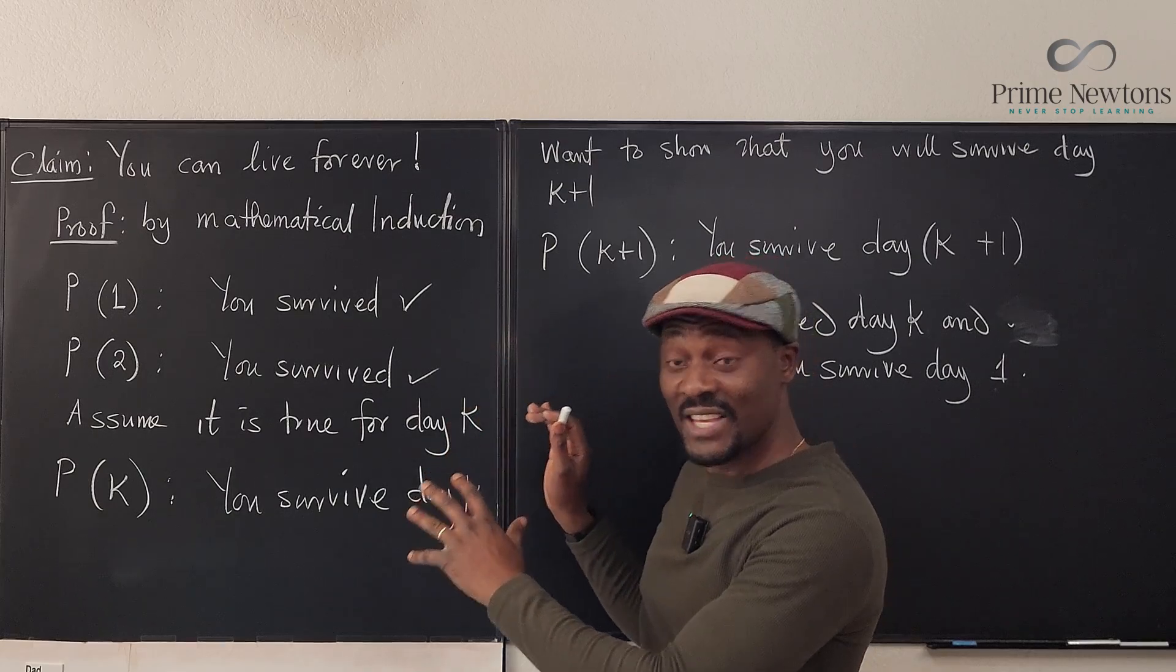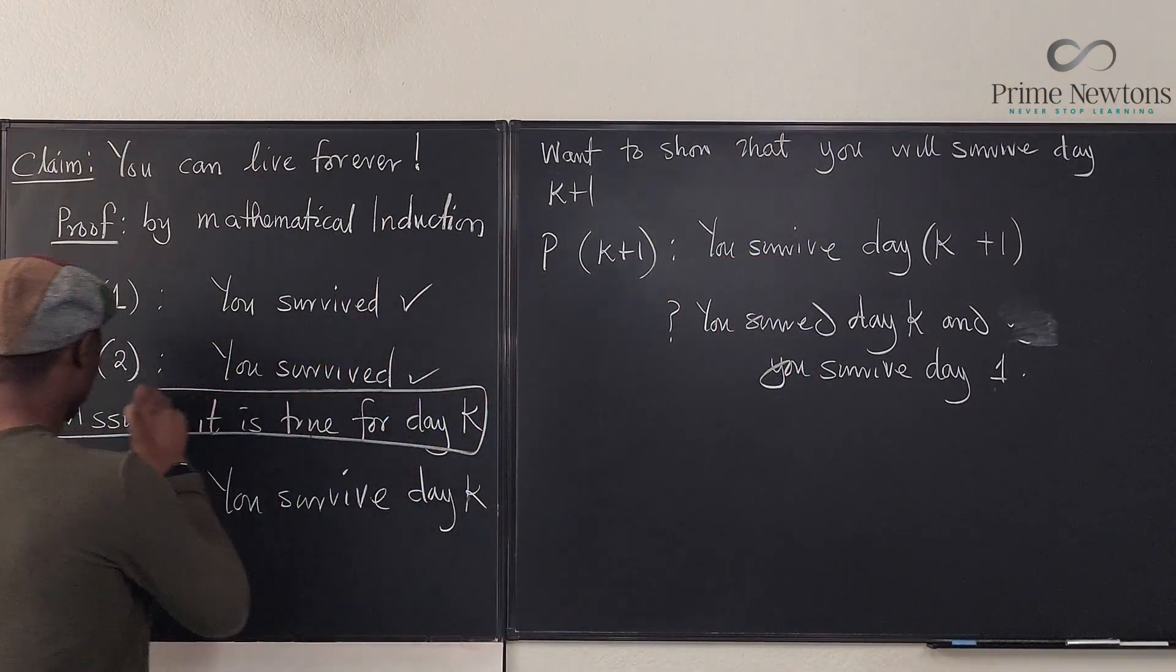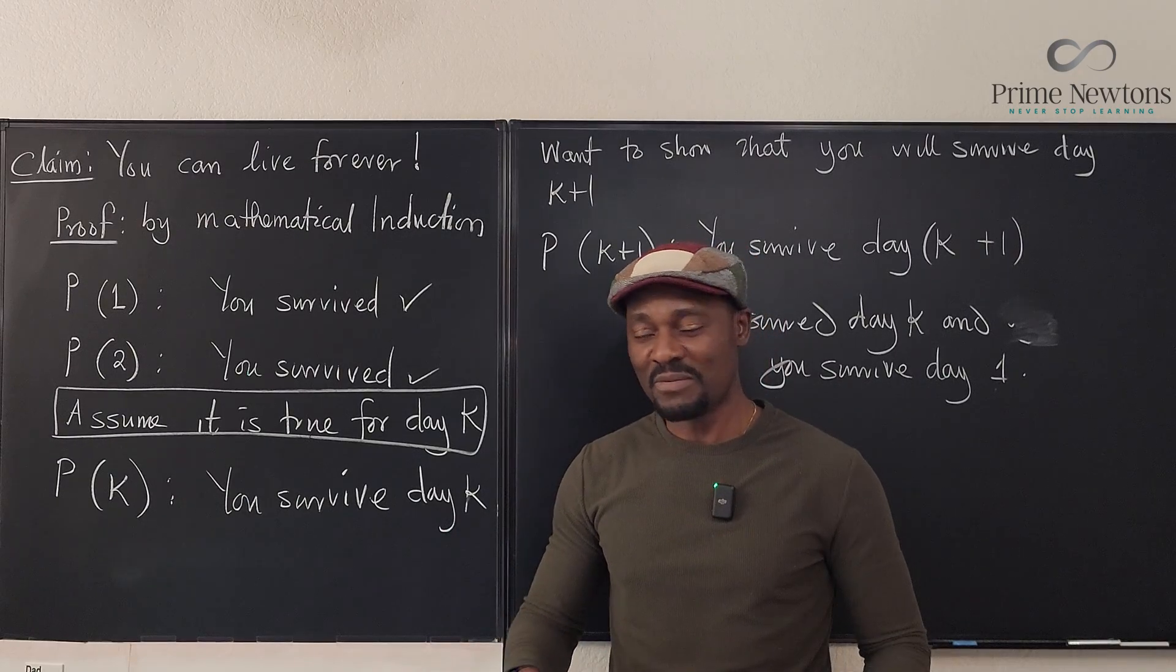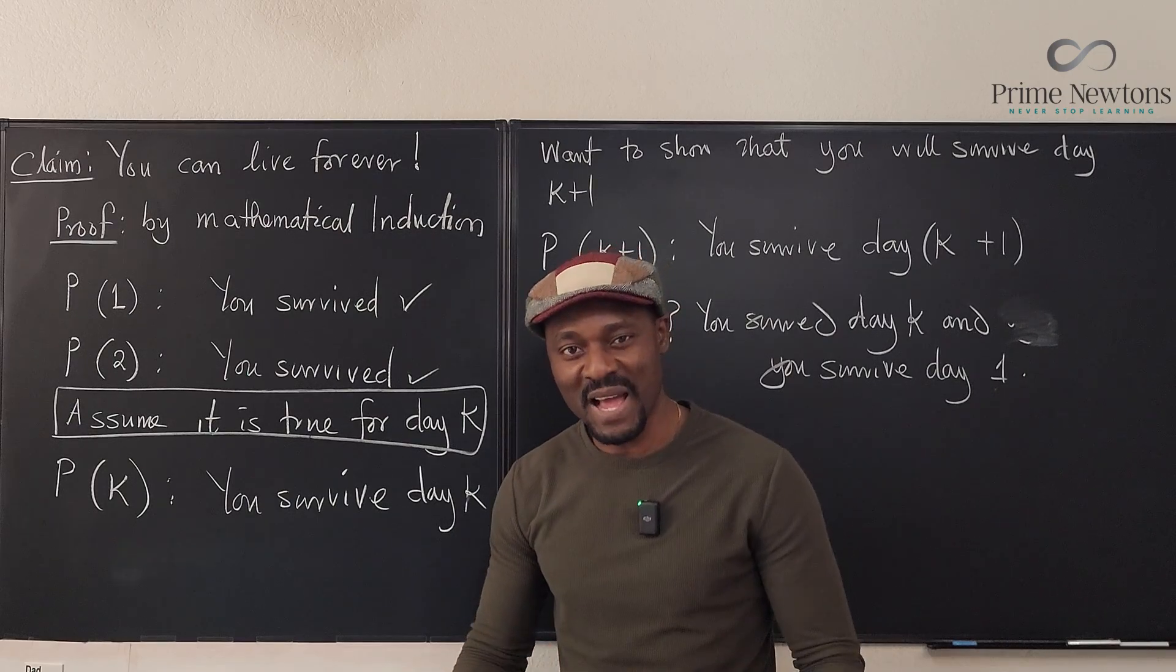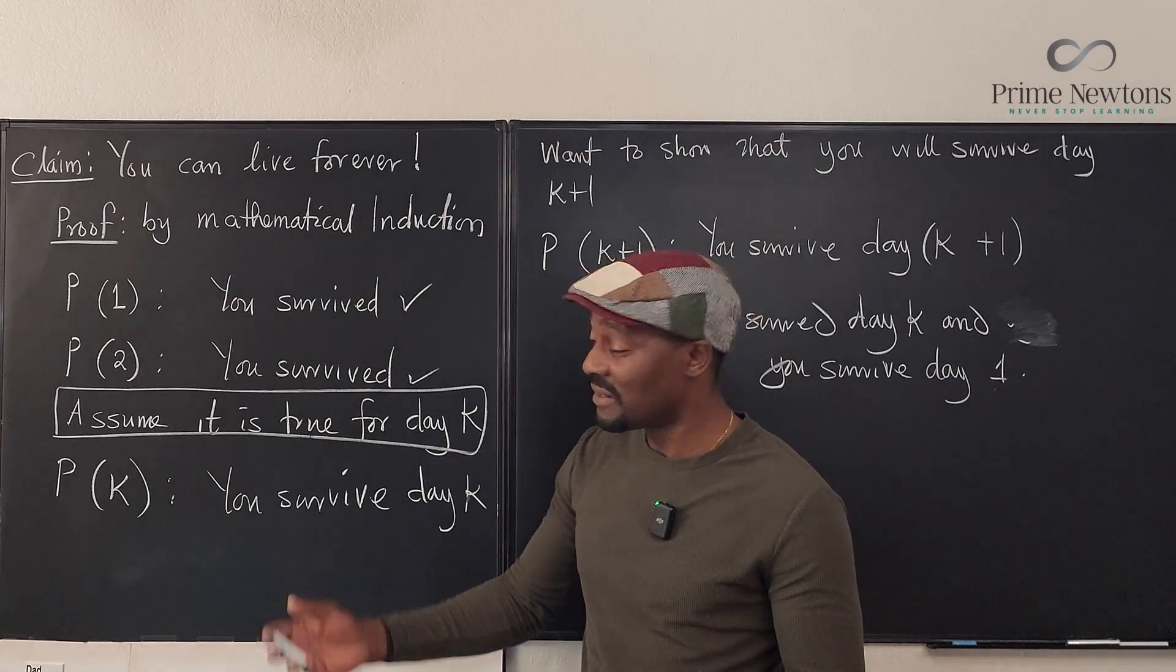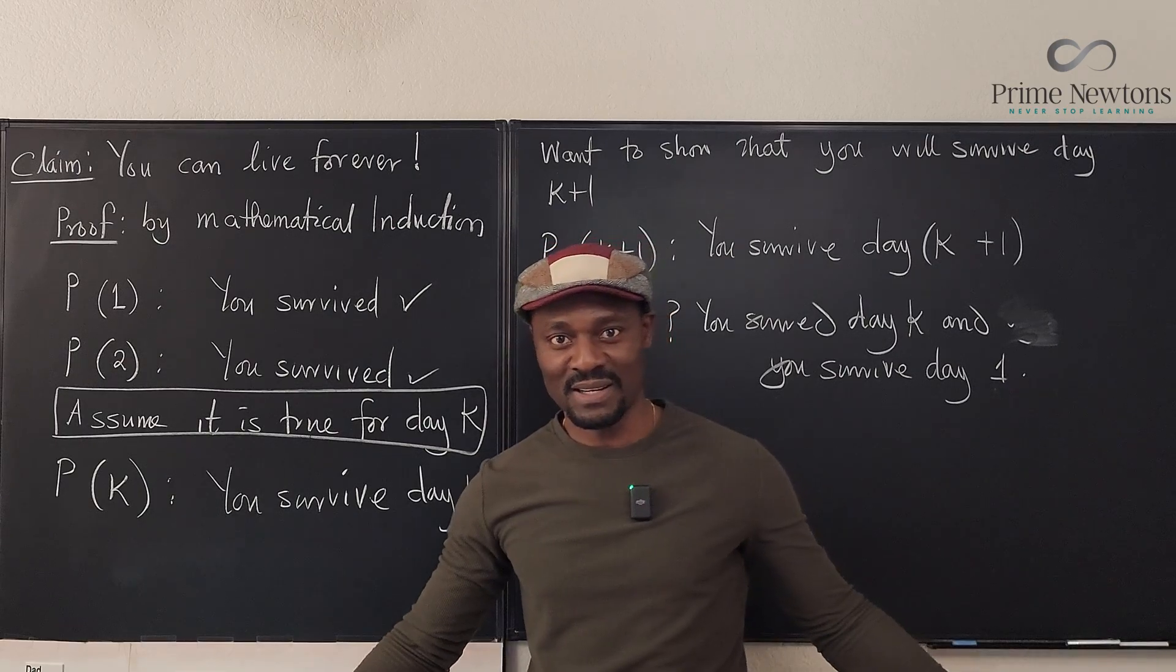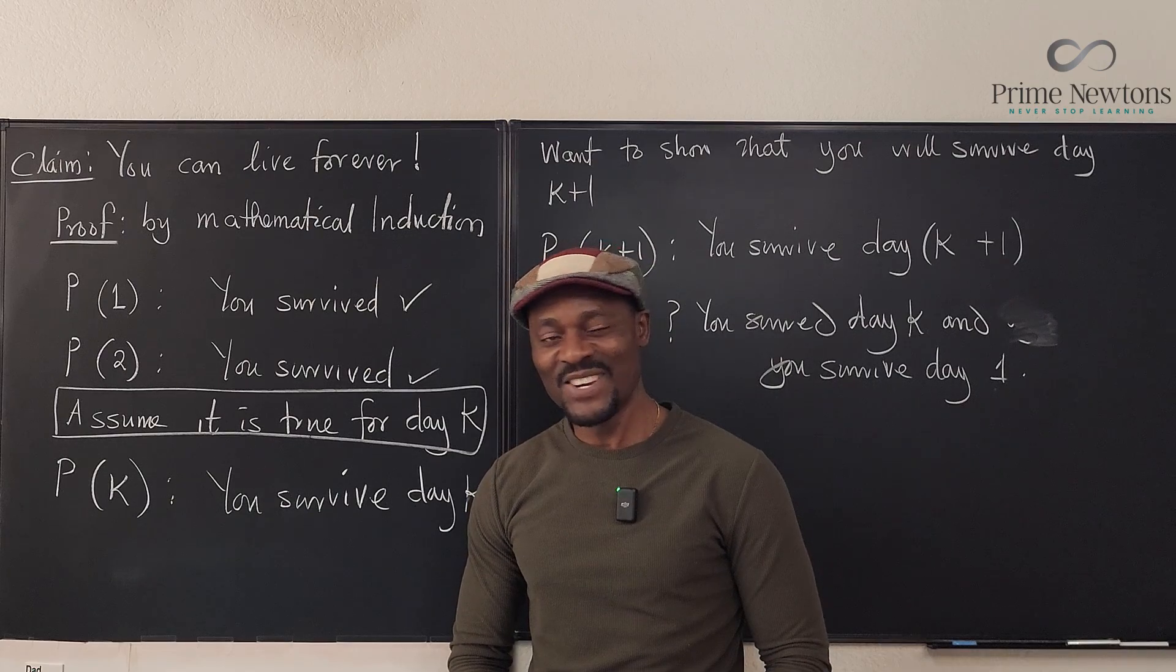So the problem with this is just that this assumption is illogical. That you survive day one does not mean you will survive day two. So it might be scientific, it might be religious, it might be emotional, but it's not mathematical. So it is impossible to prove by mathematical induction that you can live forever. Because if we can prove that you surviving today guarantees that you survive tomorrow, then everybody lives forever. But nobody lives forever. Living forever is not guaranteed, not available even.